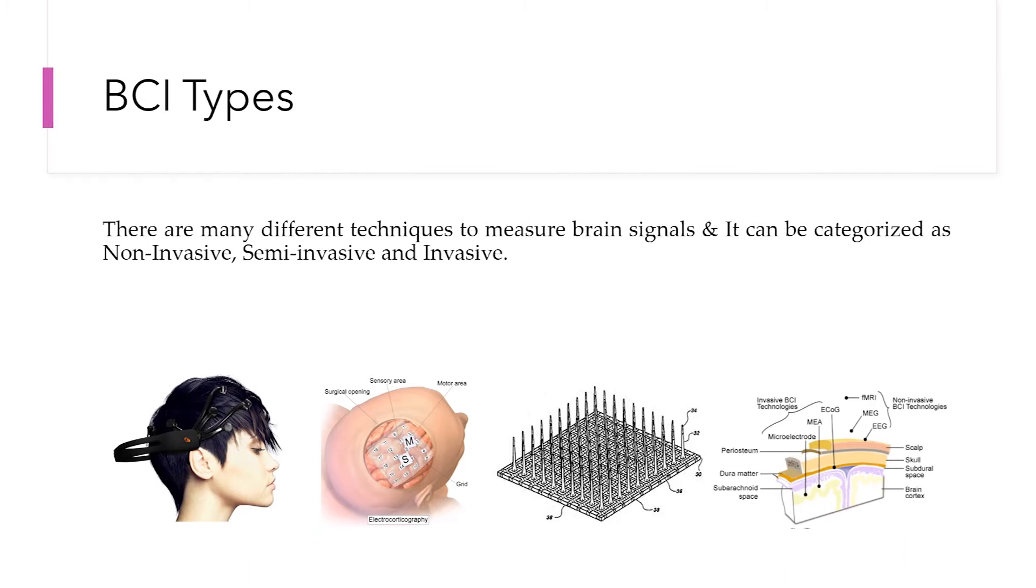A neurotransmitter is defined as a chemical messenger that carries, boosts, and balances signals between neurons or nerve cells and other cells in the body. These chemical messengers can affect a wide variety of both physical and psychological functions including heart rate, sleep, appetite, mood, and fear.